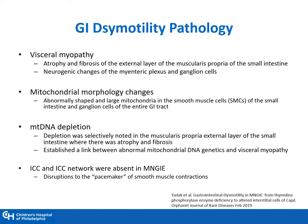Recent studies have shown that there is depletion of the interstitial cells of Cajal in the smooth muscle. Interstitial cells of Cajal are the pacemaker cells of the smooth muscle and small bowel, and when they are absent, there is a decrease and disruption to the smooth muscle propagation and contractions — hence, patients present with various degrees of GI dysmotility.